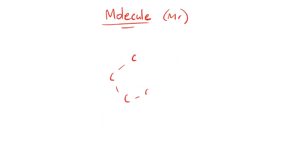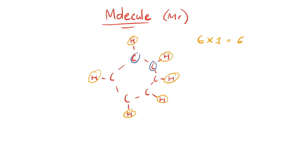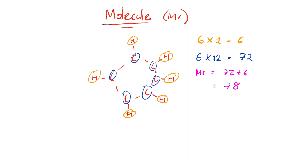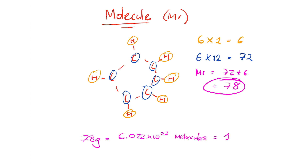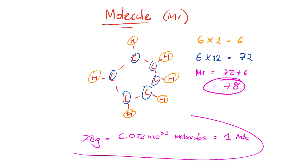What if the substance in question is not a singular atom but a molecule? To calculate relative molecular mass, we add up the atomic masses of the atoms that make up the molecule. For example, benzene has 6 carbons and 6 hydrogens. So 6 × 12 plus 6 × 1 gives us 78 — the relative molecular mass of benzene. If we had 78 grams of benzene, we'd have 1 mole and 6.022 × 10²³ molecules of benzene.